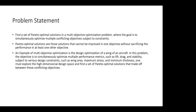This is useful in various aspects. For example, if we have to design the wing of an aircraft, we have to optimize lift, drag, and stability subject to constraints such as wing area, maximum stress, and minimum thickness. We are trying to maximize the performance of two or three different things, but improving one may decrease another.